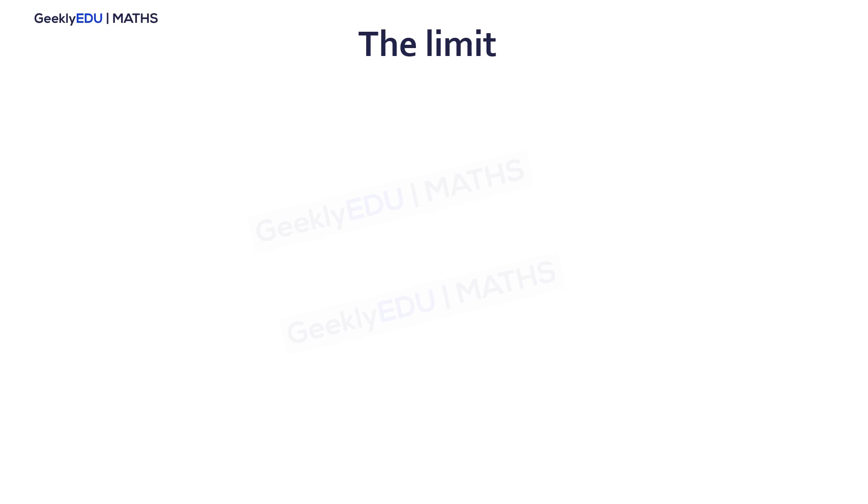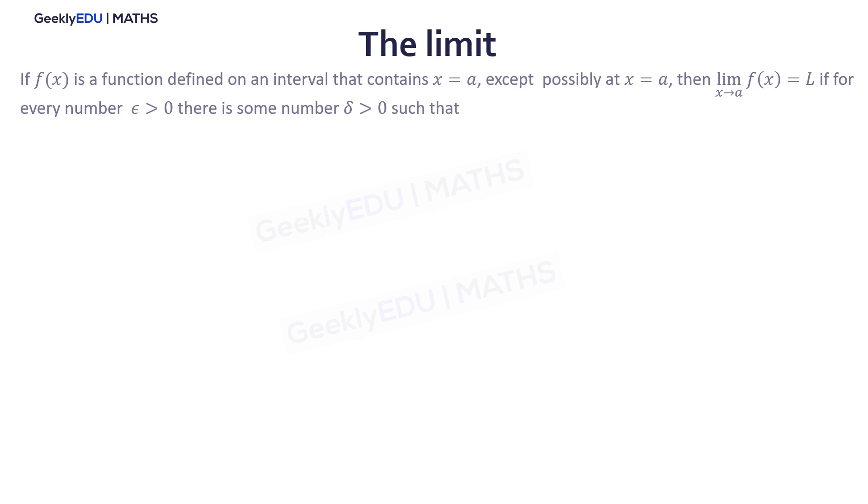It is important to have clear the concept of the limit, so let me refresh your memory. If f is a function defined on an interval that contains x equal to a, except possibly at x equal to a, then the limit when x approaches to a of the function will be a value equal to l in the y-axis. If for every number epsilon bigger than 0, there is another number delta bigger than 0, such that the absolute value of x minus a takes a number between 0 and delta, and the absolute value of the function f minus the number l is less than epsilon.